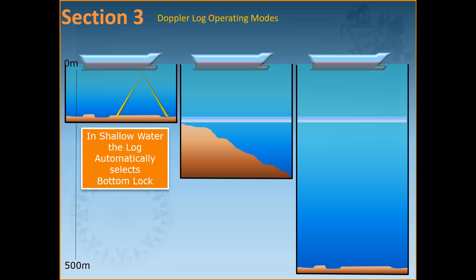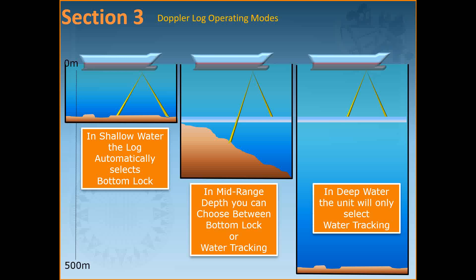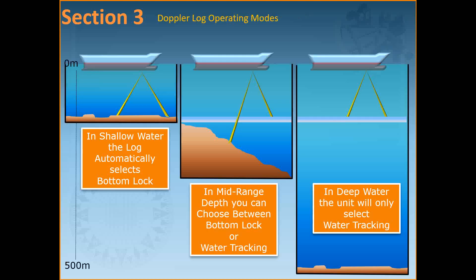A log may hold bottom lock down to about 200 meters and may use a water reference layer at about 20 to 30 meters for water track. This log may operate at a minimum underkeel depth of about 2 meters. For underkeel depths of 2 to 30 meters the log must operate in bottom track. In depths greater than 200 meters the log must operate in water track only, using the 20 to 30 meter reference layer. For depths between 30 and 200 meters the log can operate in either mode. The navigator selects which mode to use, except that the log will automatically switch to bottom track in shallow depths and water track in deep water.